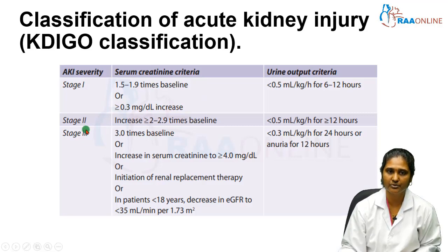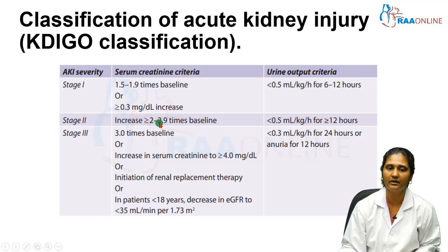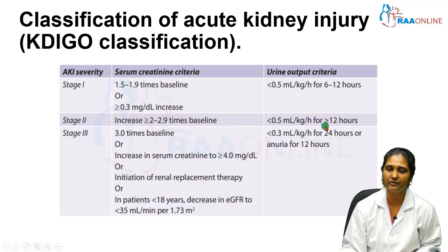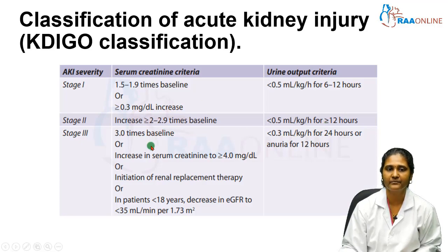In Stage 2, the serum creatinine increases to 2 to 2.9 times the baseline, and urine output is less than 0.5 mL per kg per hour for 12 hours or more.